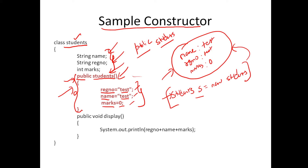What is the use of a constructor? It's a special method used for initializing an object at the time of creation itself. This is called a default constructor, or you can call it a no-argument constructor — because this method is not taking any input arguments. Now we will see how a constructor is used in a live demo.